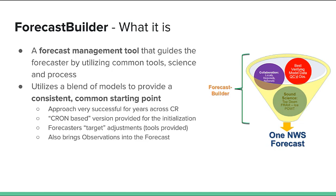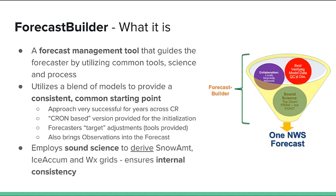After the common starting point gets put into your forecast, forecasters can go in and make targeted adjustments, with tools provided to help that out. You can also bring observations into the forecast via Forecast Builder to ensure that the current grids reflect reality. Forecast Builder employs sound science to help derive snow amount, ice accumulation, and weather grids, therefore ensuring internal consistency. Currently in Central Region, combined with Forecast Builder, there's a new extension called Hazard Builder to help produce IDSS graphics — though it's just an experiment.